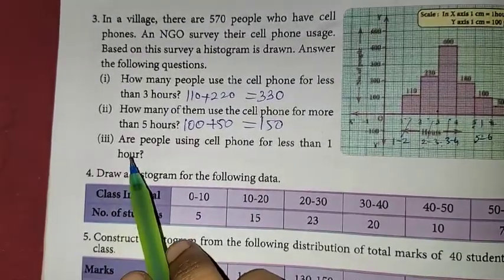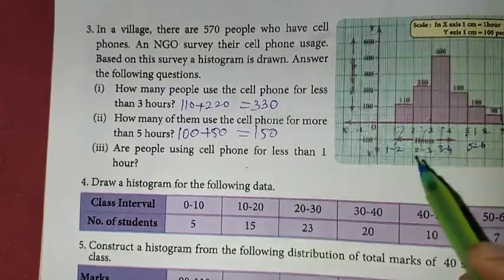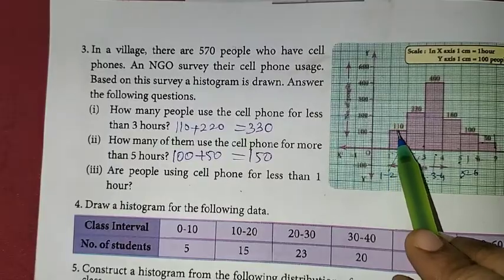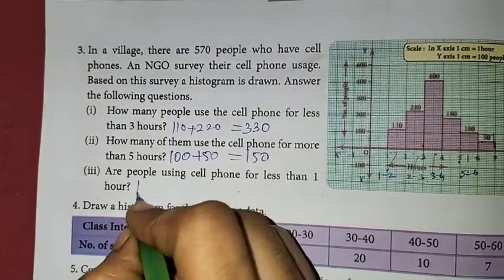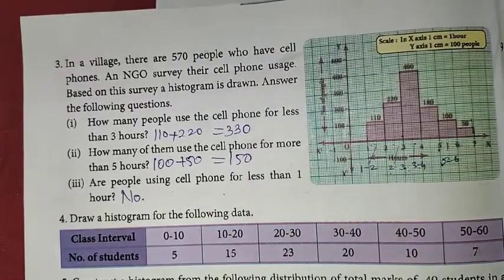Next, are people using cell phones for less than 1 hour? 1 hour, starting 1 hour. So if someone comes to cell phones for less than 1 hour, this is the answer. Who can use cell phones for less than 1 hour?